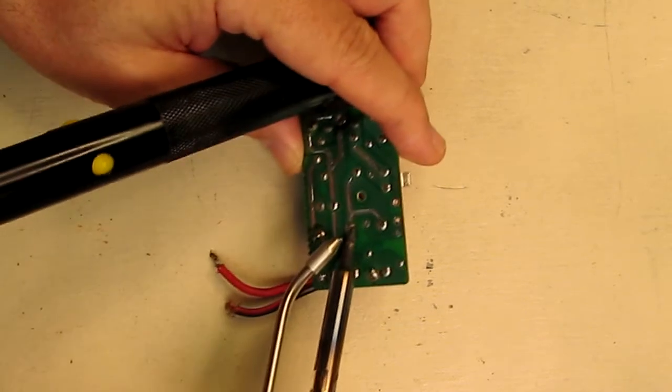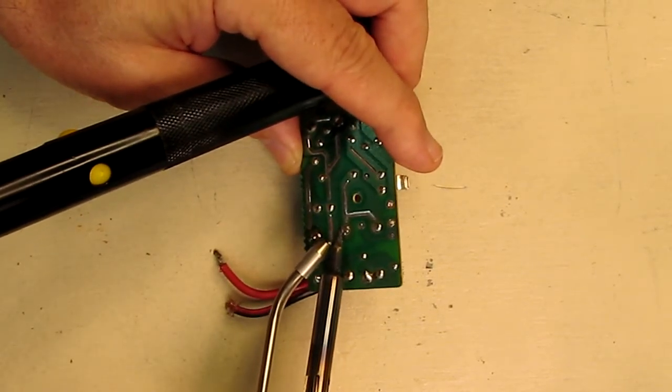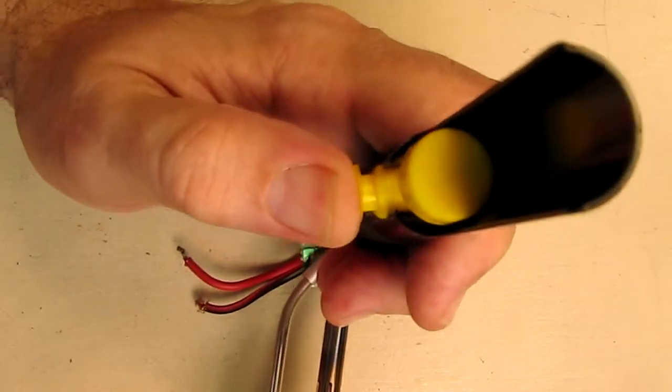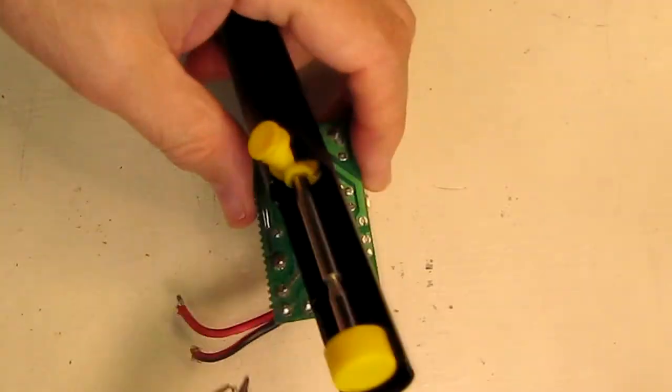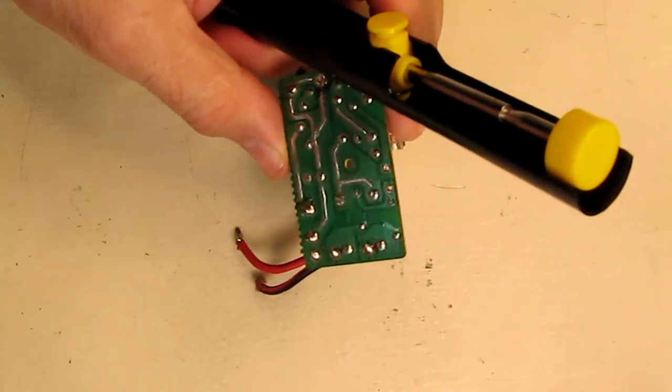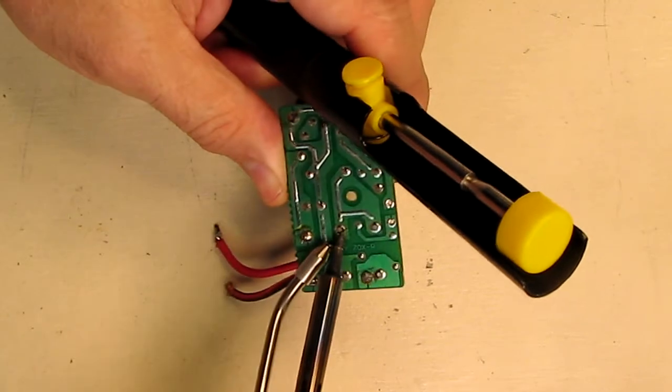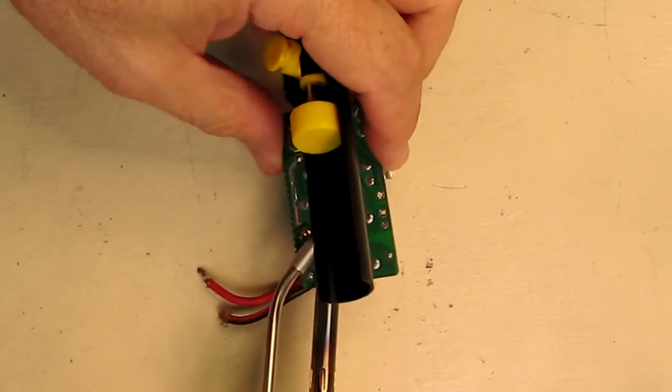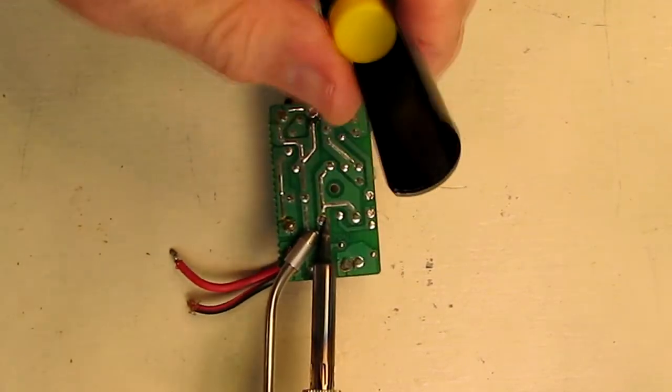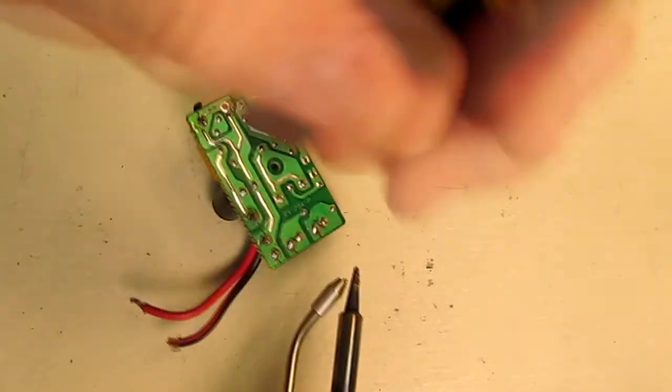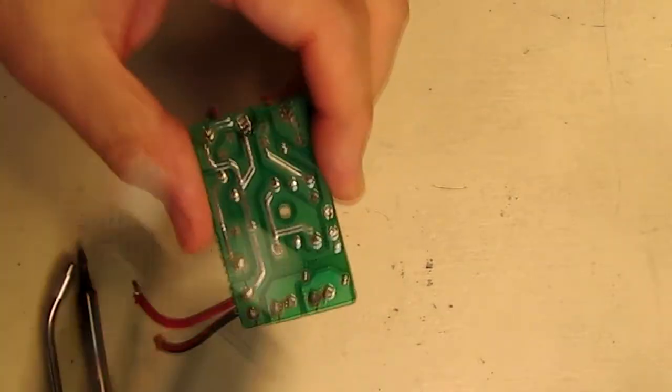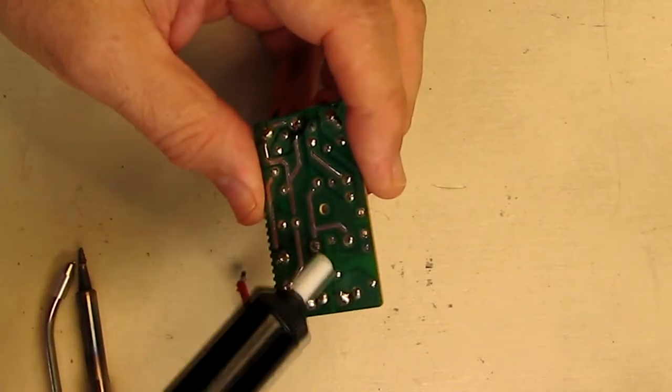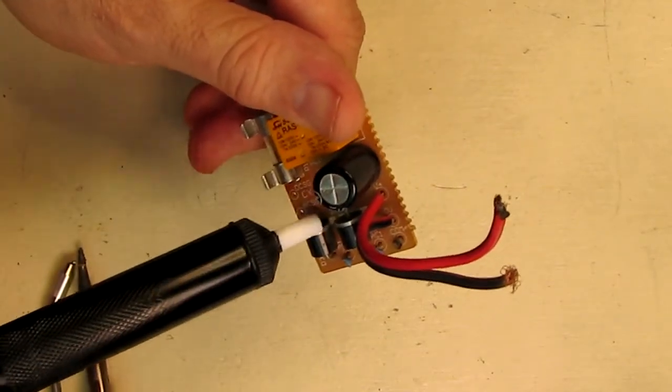A lot of times you have circuit boards that have components that you want to remove. You're going to heat up the connection using the soldering iron, and the solder starts to get melted. Then you put the solder sucker on there, hit the button, and what it does is it starts retracting the solder so that you can remove that component a lot easier. It pulls the solder up on that connection so that you could lift the component out of there.